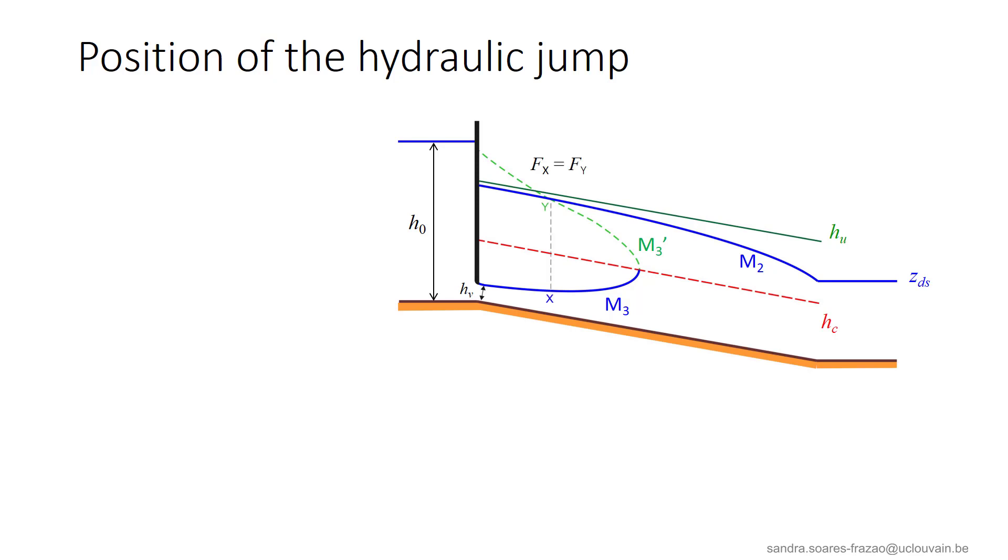Next, the sequent profile crosses the M2 profile at point y. For this point, we know that we have the equality of the specific forces Fx equals Fy. So, we could consider that xy, here, this vertical line, is the position of the hydraulic jump.